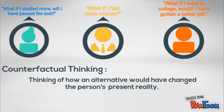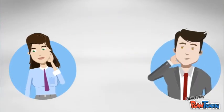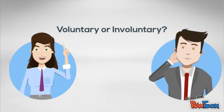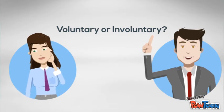It is when you imagine an alternative for an event and how it would have affected your present reality. These thoughts happen more frequently than you think, and most of the time the process is voluntary. However, in some cases it can also be involuntary.